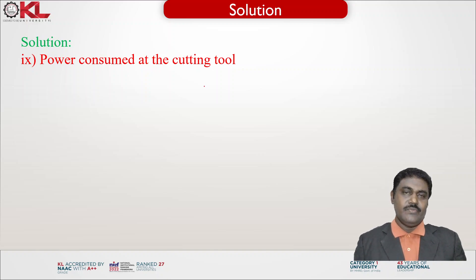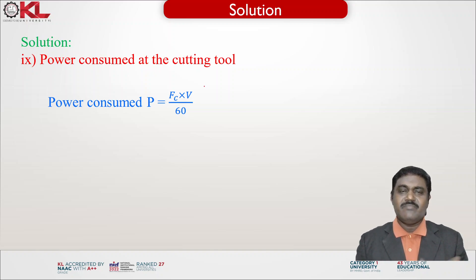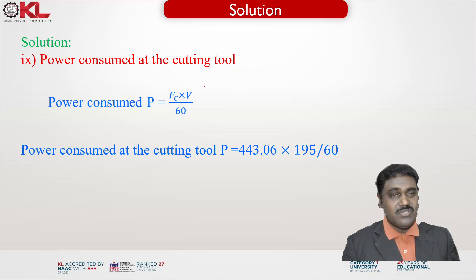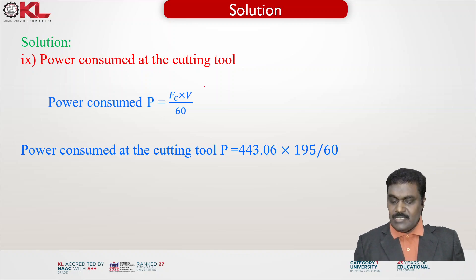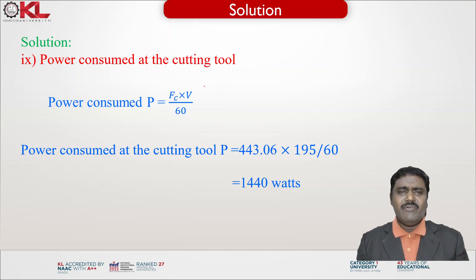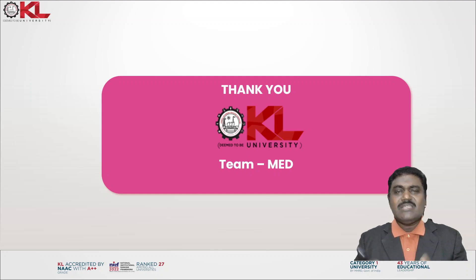For the ninth item, power consumed at the cutting tool: the formula is cutting force multiplied by velocity divided by 60, converting minutes to seconds. Substituting cutting force = 443.06 Newtons and V = 195 m/min gives power = 443.06 × 195 / 60 = 1440 Watts, or 1.44 kilowatts. This is the power consumed at the cutting tool. I hope everyone understands how to solve numerical problems using the merchant circle diagram.